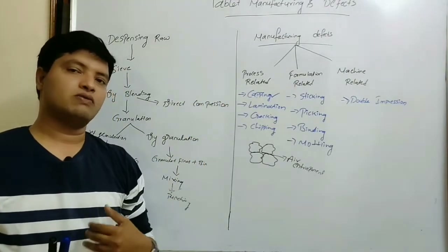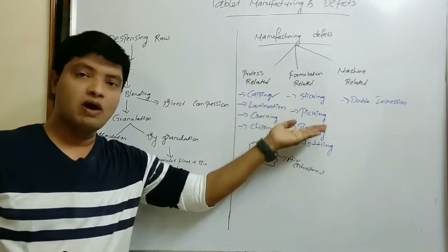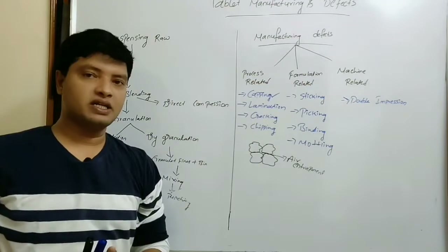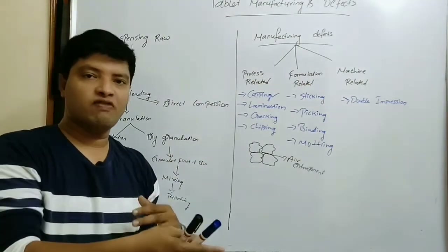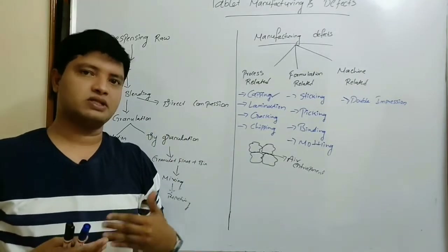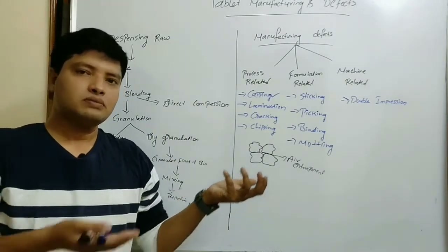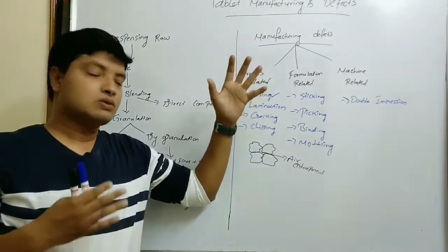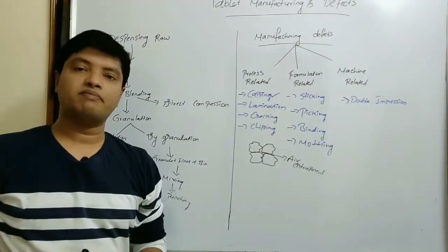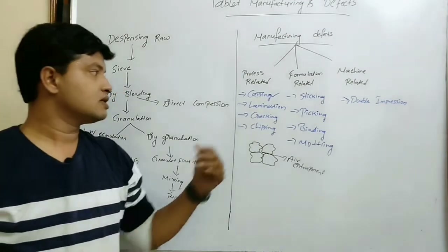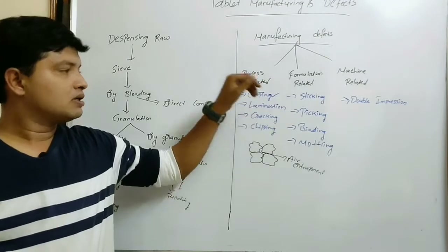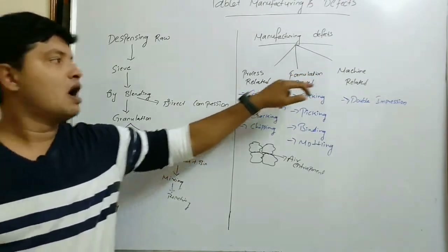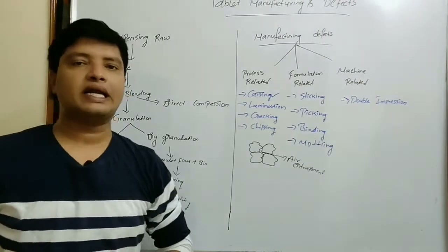For example, if you are drying the granules and you over-dry them, what kind of defect can occur? Then we have formulation related defects — if you add more or less fines, if your binder is at the wrong concentration, or if something non-compressible is present in the formulation. What problems occur when a mistake is made in the formulation? For example, capping can occur from process related variables, formulation related variables, or machine related variables.